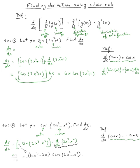Therefore, dy/dx equals minus sine of two x cubed minus x squared, times six x squared minus two x.